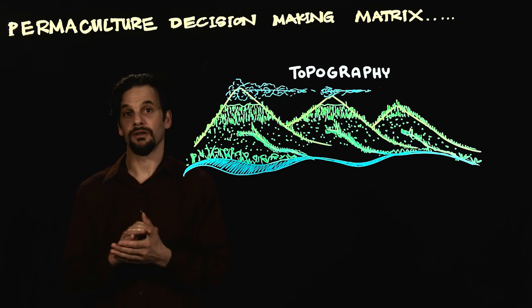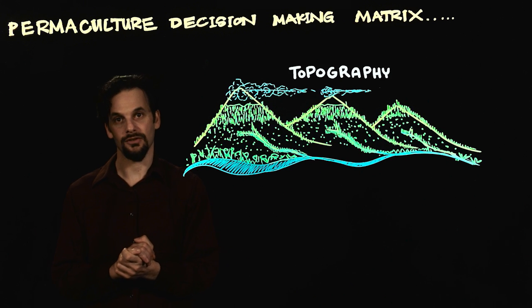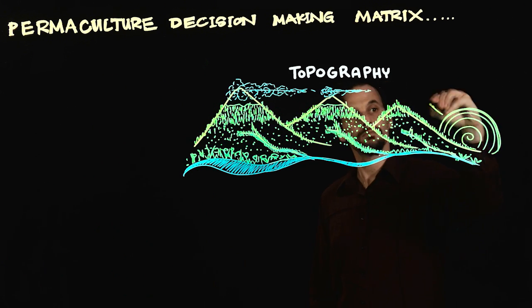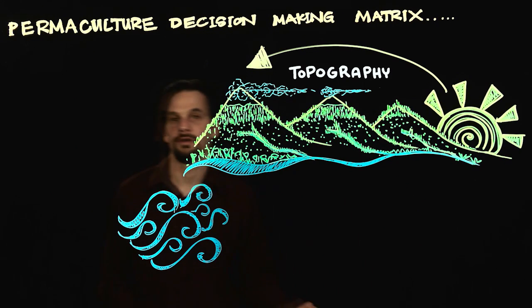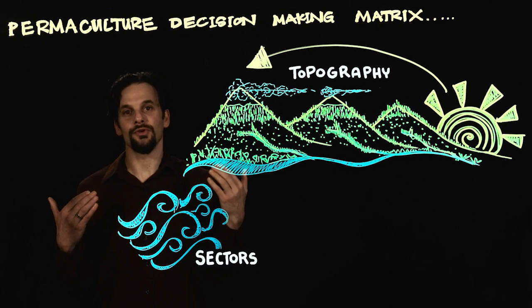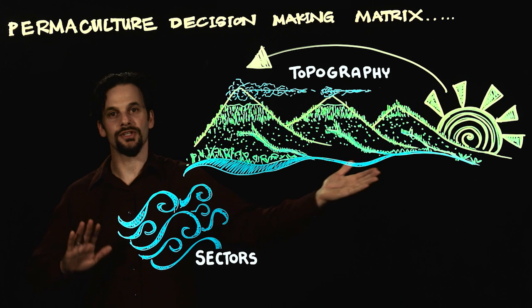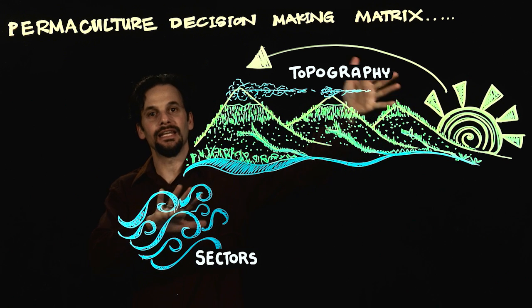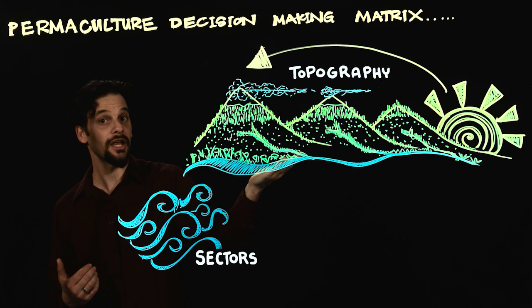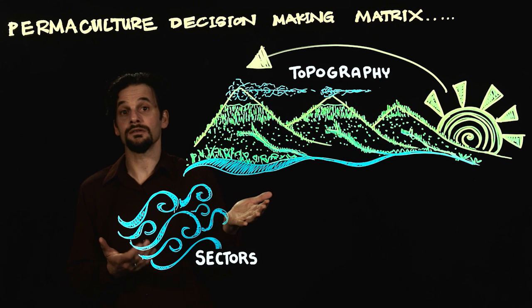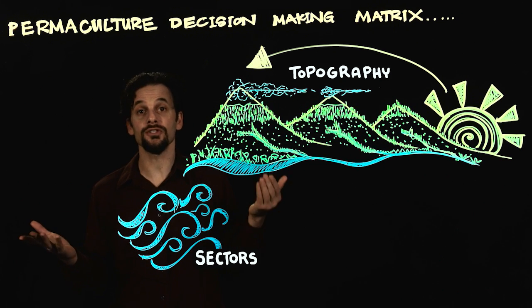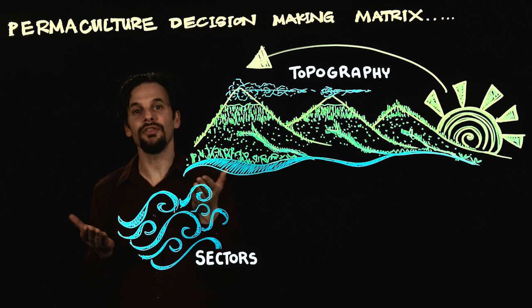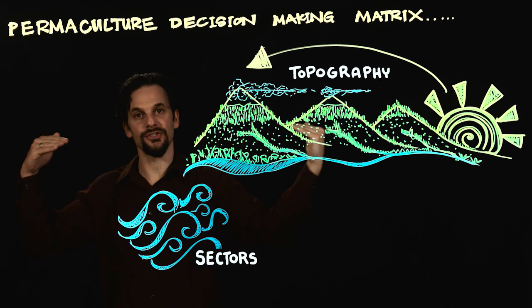Aside from topography, we have a thing we call sectors. Sectors represent directional forces that come from outside the site in. This could be sunshine, warm or cold winds, storms, wildfire, frost, noise, pollution, or anything else that points in from outside.